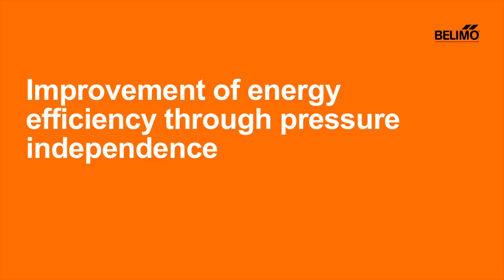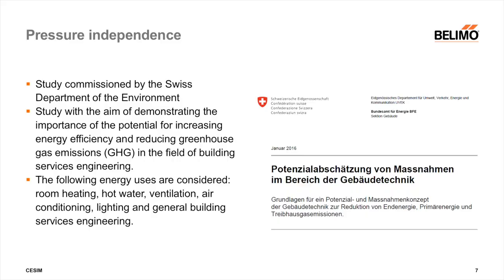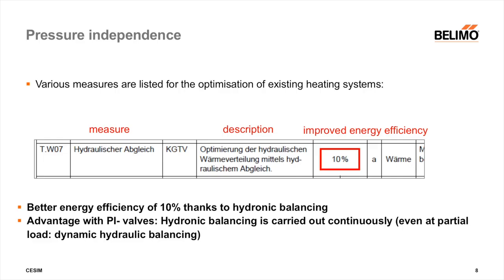Improvement of energy efficiency through pressure independence. In 2016, a study was carried out in Switzerland with the aim of demonstrating the potential for improving energy efficiency. Heating systems, hot water systems, and HVAC technology were analyzed. The basic question was: where and how can energy efficiency be improved in building services in Switzerland? Hydronic balancing is listed as an important measure in this study.